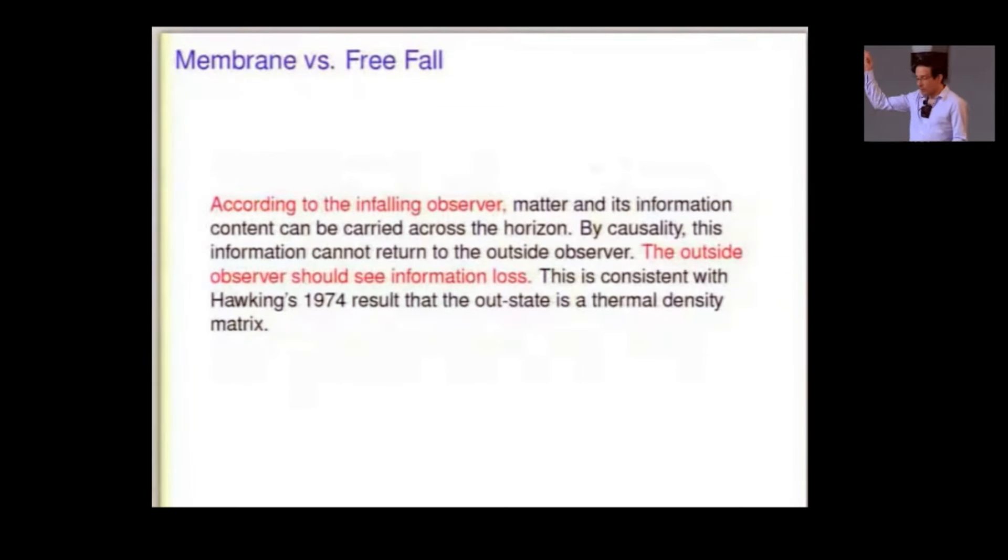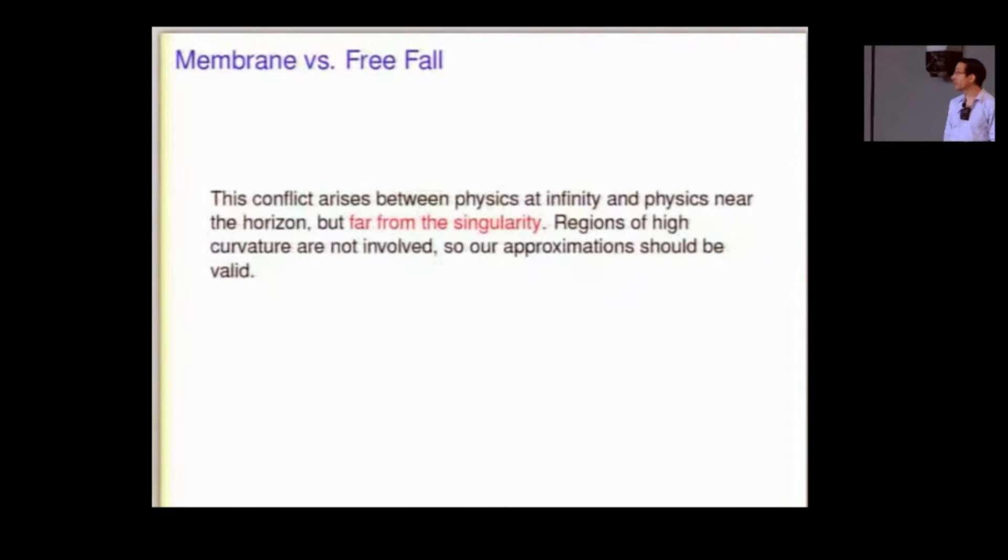So, to him, it's clear that the outside observer should see information loss. How could the information possibly get out if it just went into the black hole? By causality, it can't get out. So, in fact, this, of course, this hand-waving story is much more convincingly supported by Hawking's most beautiful calculation that shows that, apparently, the black hole takes a pure state to a density matrix.